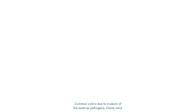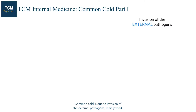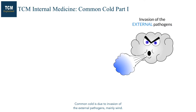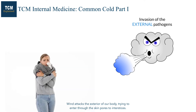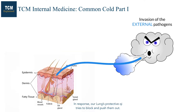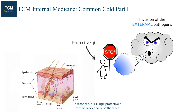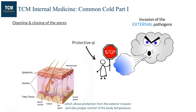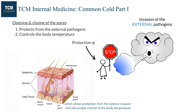Common cold is due to invasion of external pathogens, mainly wind. Wind attacks the exterior of our body, trying to enter through the skin pores to interstices. In response, our lungs' protective Qi tries to block and push them out. The protective Qi manages opening and closing of the skin pores, which allows protection from exterior invasion and also proper control of body temperature.